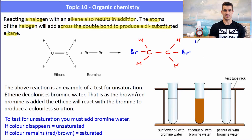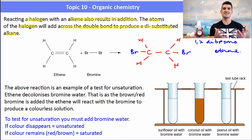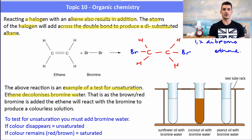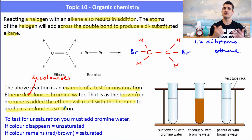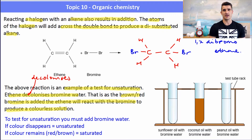This type of reaction is a test for unsaturation. Ethene, or anything with a double bond, decolorizes bromine water: the red-brown bromine reacts with the double bond to produce a colorless solution. Looking at the diagram: sunflower oil with bromine water goes clear — it is unsaturated and reacting with the bromine. Coconut oil stays brown, meaning it is a saturated hydrocarbon. Peanut oil also goes clear, confirming it is an unsaturated hydrocarbon.